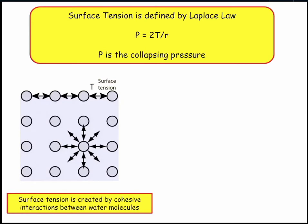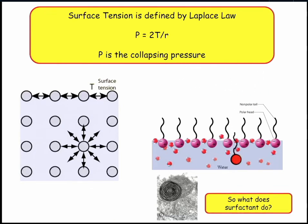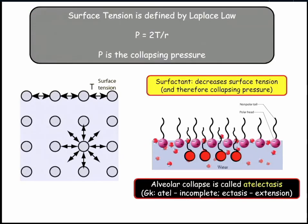Where does surface tension come from? Surface tension arises from cohesive interactions between molecules — that's chemistry. In an animated drawing, you can see surfactant molecules with a hydrophobic end and a hydrophilic end. Surfactant comes in and breaks up those adhesive forces — that's surface tension. Surfactant decreases those surface tension forces, and that's what it does.